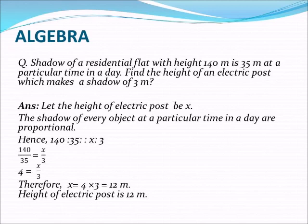Hence, here height of residential flat 140 and the shadow is 35, their ratio is 140:35. Height of post x and its shadow is 3 meters, the proportion is x:3. They are proportional.